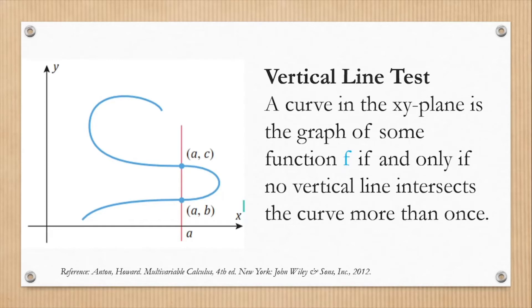Let us recall the concept of vertical line test. When do we use this test? A curve in the xy plane is the graph of some function f if and only if no vertical line intersects the curve more than once. We can also identify a graph whether it is a function or not using the vertical line test. In this example, it intersects at two points, meaning for one value of x we have two values of y, so this is not a function.